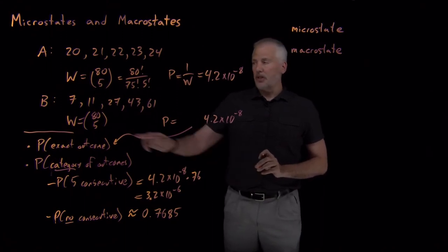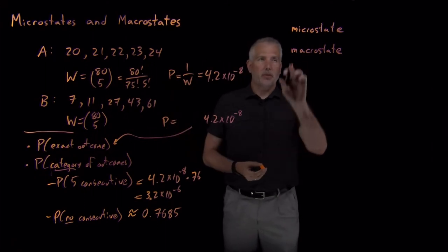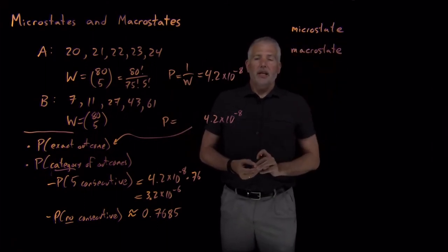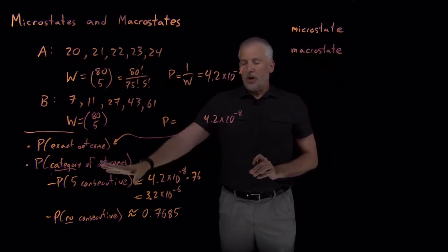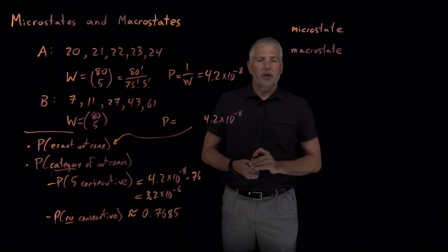So microstate is intended to describe the microscopic arrangement of particles in a system. So if we're particularly interested in the lottery example of exactly which numbers we got as one of the outcomes, then we're describing a microstate. But more often than that, we're interested in describing some category of outcomes and we'll describe that as a macrostate.